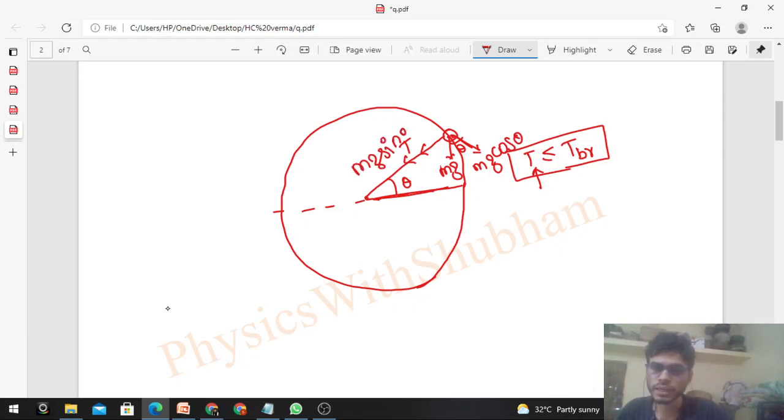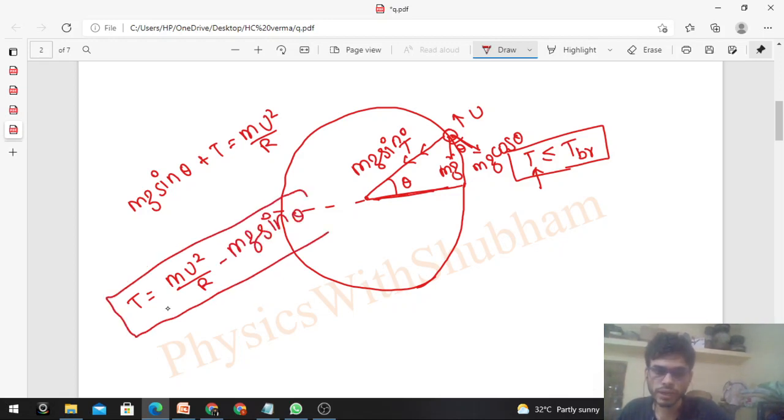If the particle's speed at this position is u, then the equation will be mg sin theta plus tension equals mu squared upon r. From here, find out the value of tension: mu squared upon r minus mg sin theta. For a given speed, tension is a function of theta. Mu squared upon r and mg are constant terms. So tension depends on theta.